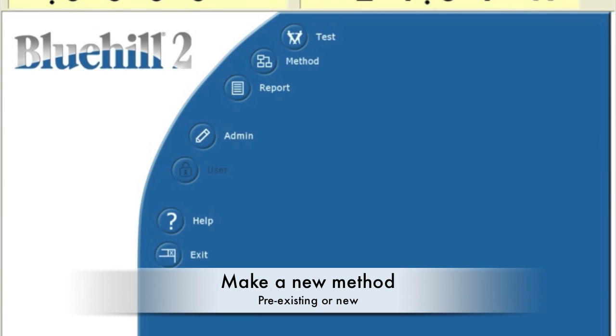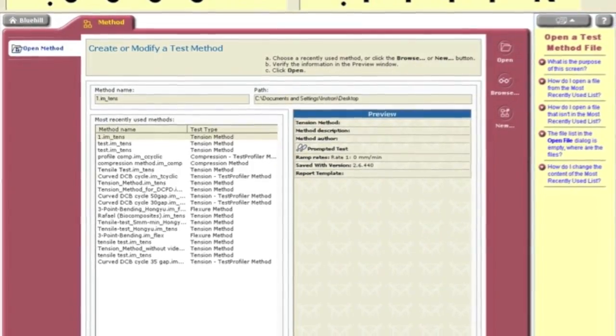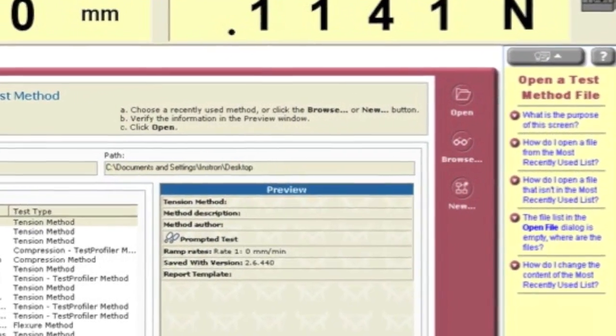To make a new method, click the method button. You can pick a pre-existing method using the browse button or create a new one. Press new and pick the type of test, which is tensile in this case.